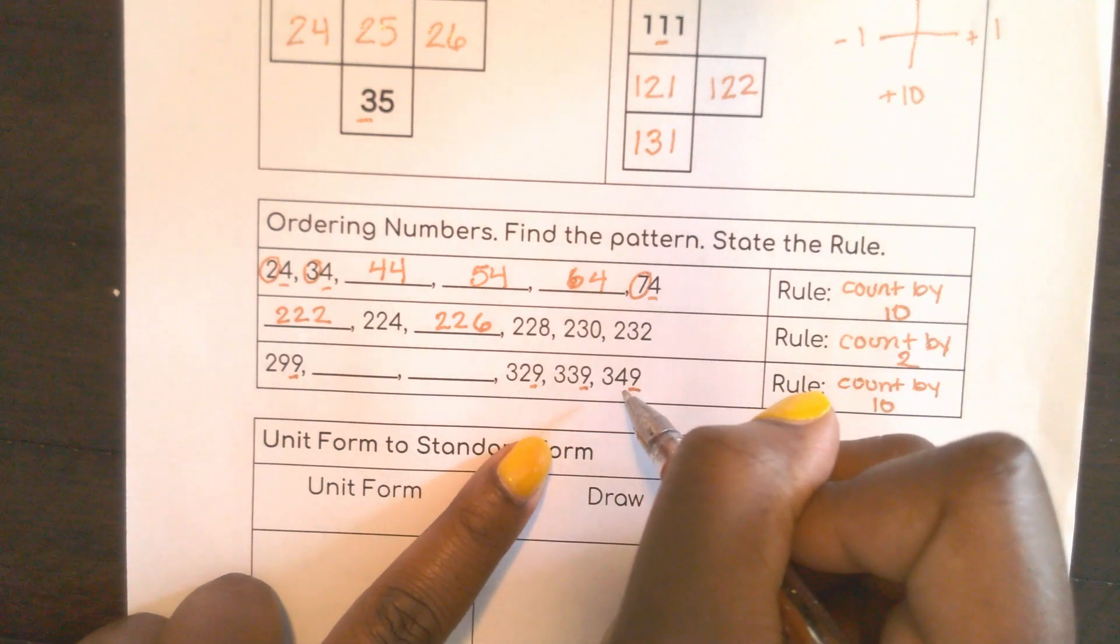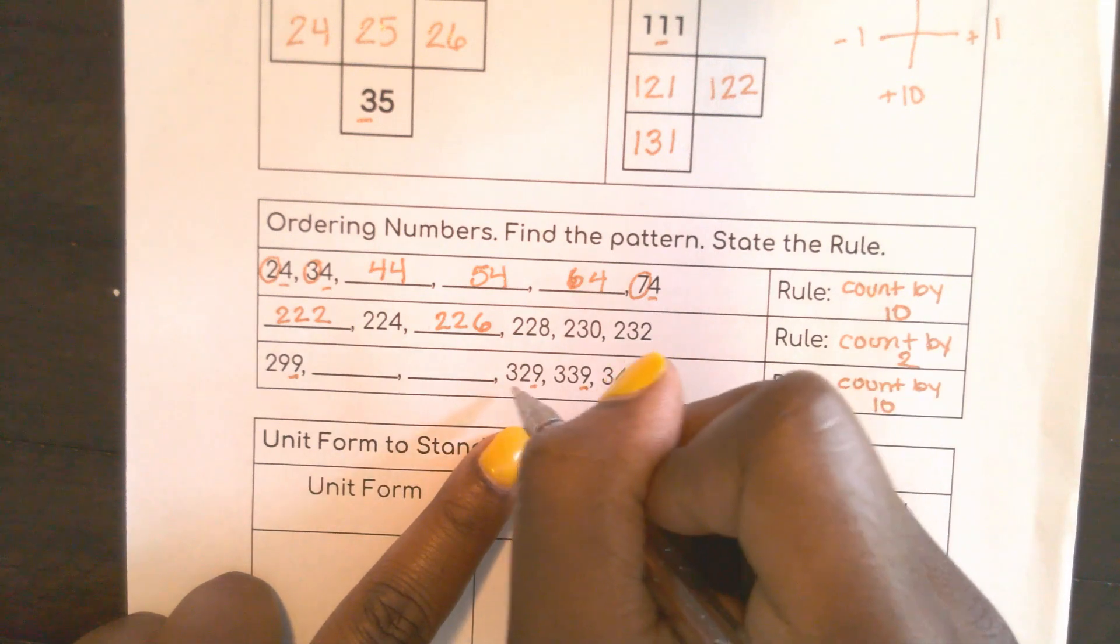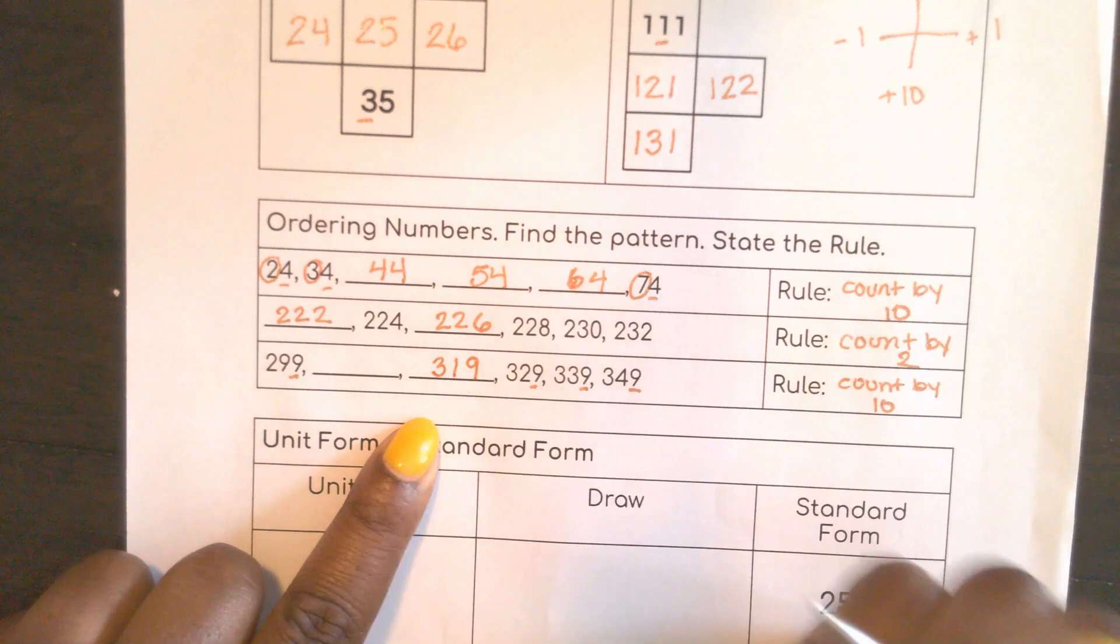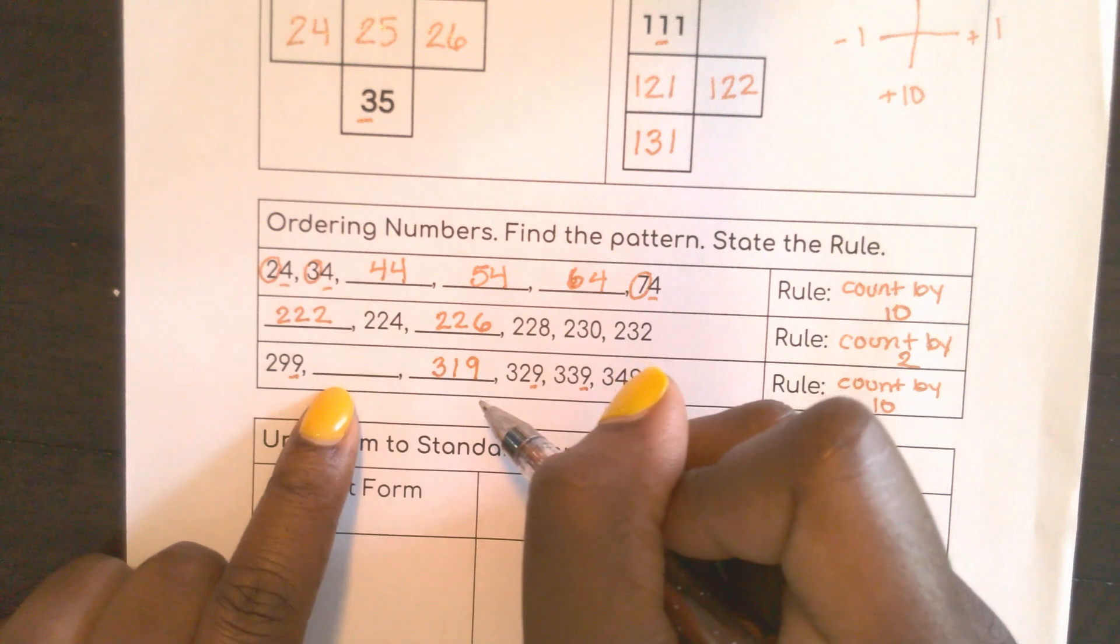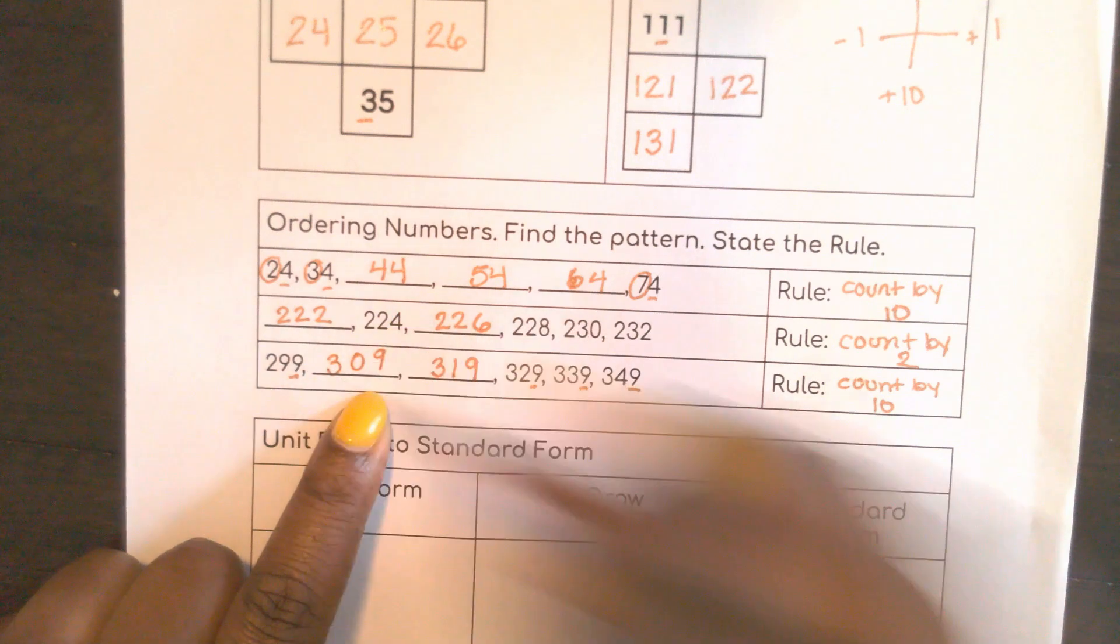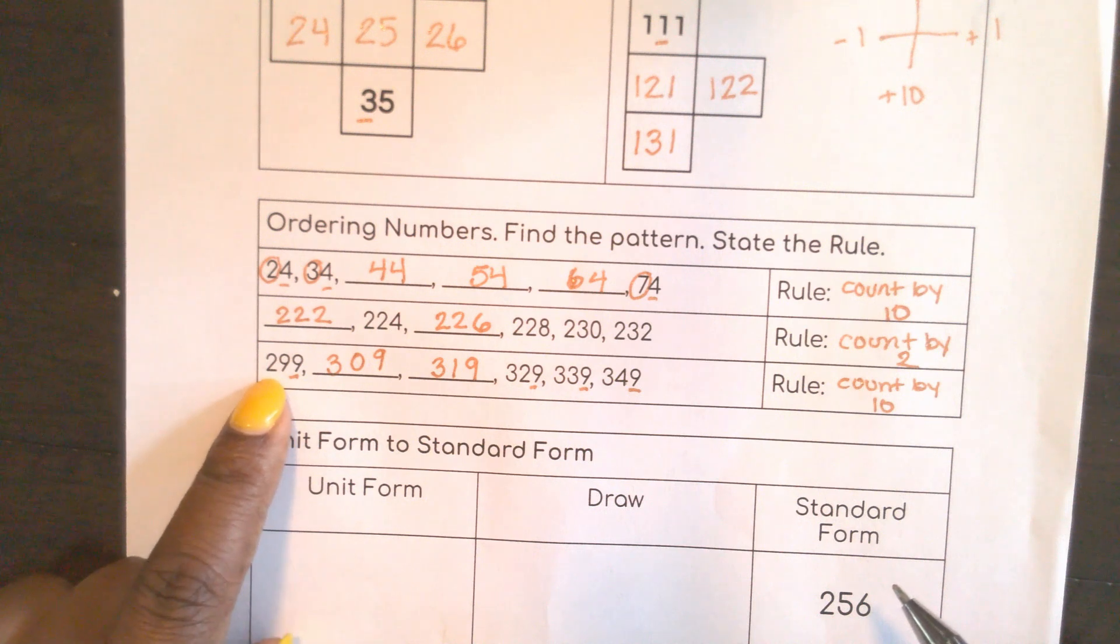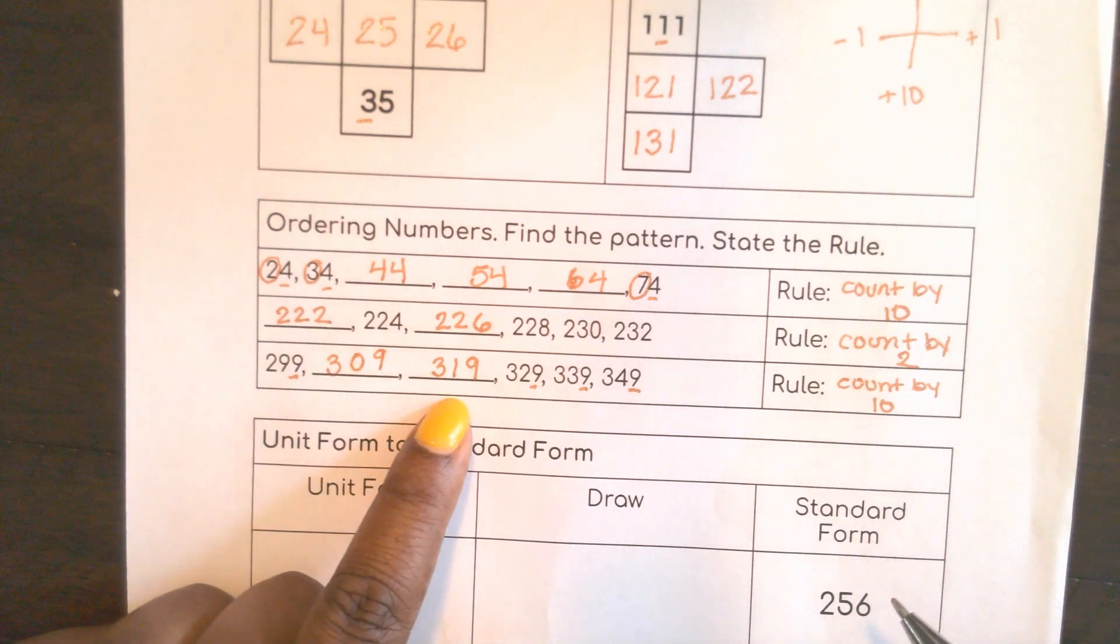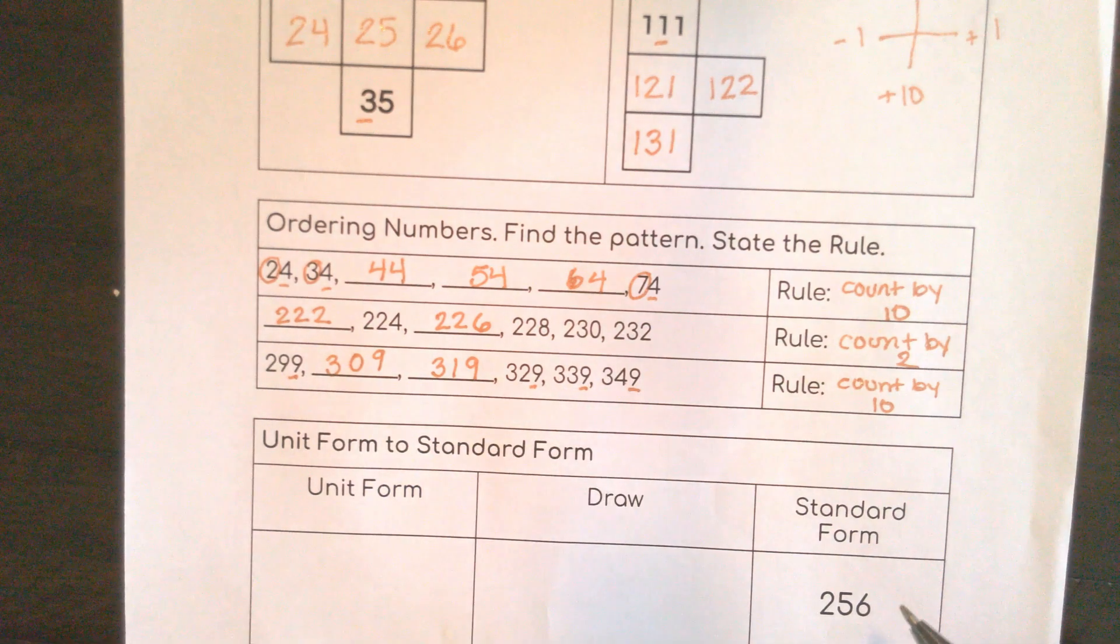So here if I just go backwards, this was 349, 339, 329, I think this would be 319. See how it's going 40, 30, 20, 10? And I don't think there's going to be any 10s here. So here I was at 299, but when I went to 300 it was just 309, then I went 319, 329, 339, and 349. Excellent work there.